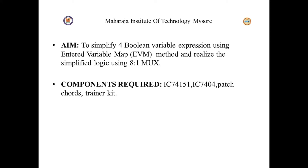A multiplexer is a combinational circuit that has a maximum of 2^n data inputs. Since we have four Boolean variables, there will be 2^4 equals 16 inputs. We need to check what the output will be for all 16 inputs. There are n selection lines, giving 2^n possible combinations of zeros and ones, so there will be 4 selection lines.